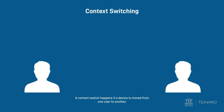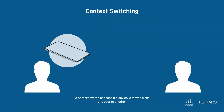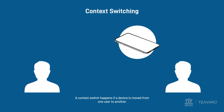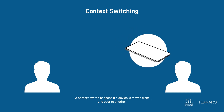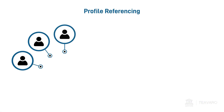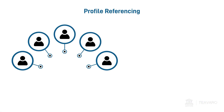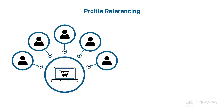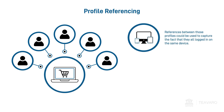A context switch happens if a device is moved from one user to another. Imagine different users logging into a self-service portal on the same device and browser. References between those profiles could be used to capture the fact that they all logged in on the same device.